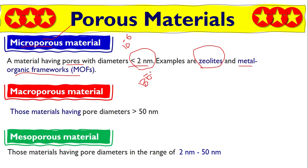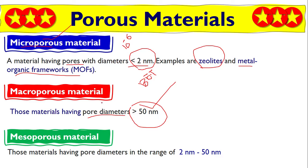The second type is macroporous. This is easier to understand: if you synthesize a material where the pore size is greater than 50 nanometers, that is called macroporous. It makes sense because 'macro' means big — so macro means big pores. If the pore diameter is greater than 50 nanometers, you call it macroporous.